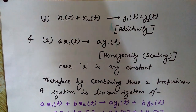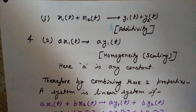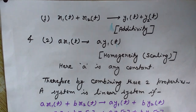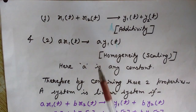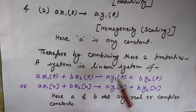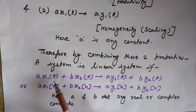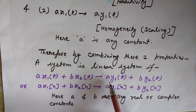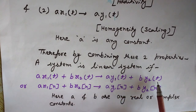Here, a is any constant. For a linear system, it is required that it should follow both the rules of additivity and the rule of homogeneity. Therefore, by combining these two properties, a system is linear. Mathematically, we can write that a system is a linear system if ax1(t) plus bx2(t) gives us a·y1(t) plus b·y2(t). This is for the continuous time domain.